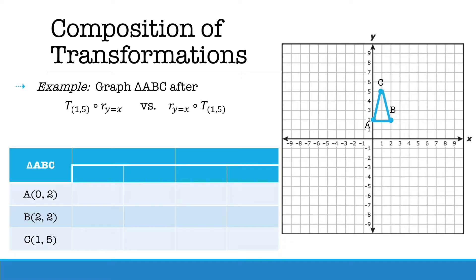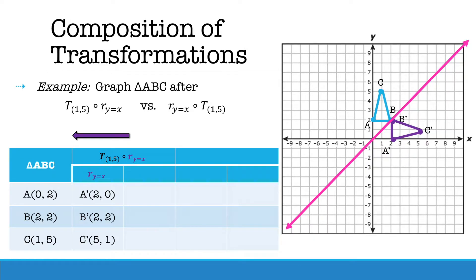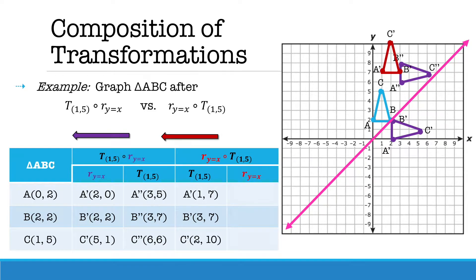Let's take a look at a composition of transformations. Here we have triangle ABC and we are going to compare the images when first performing a translation of (1, 5) follows a reflection over the line y equals x, versus a reflection over the line y equals x follows a translation of (1, 5). When comparing the two double prime images, you will see that order matters because they do not end in the same exact position. This represents why compositions are not commutative.